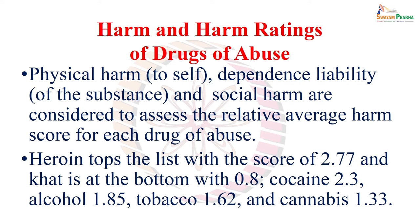Keeping these together, it has been calculated that heroin or diacetylmorphine tops the list with a harm score of 2.77, and khat — which is actually a plant — is at the bottom at 0.8. Cocaine has a score of 2.3 (quite high), alcohol is moderate at 1.85, tobacco or nicotine is 1.62, and cannabis is 1.33.